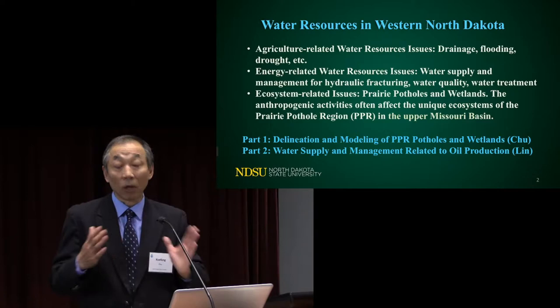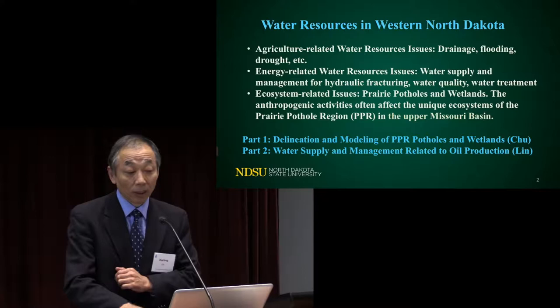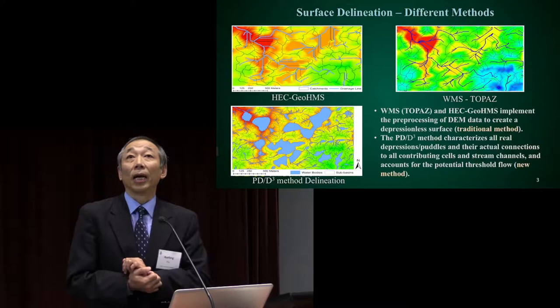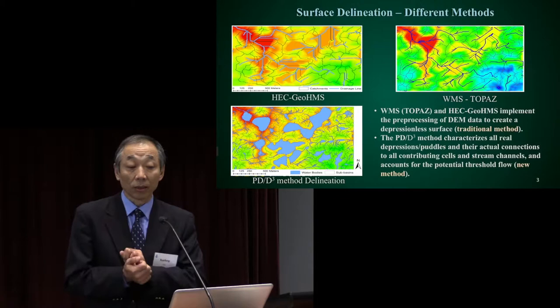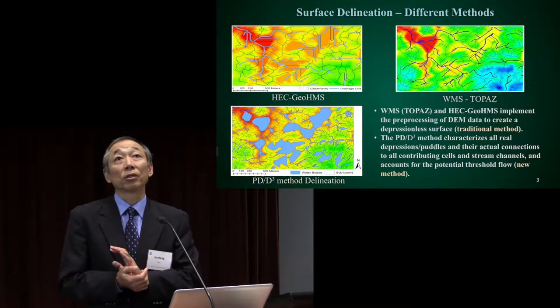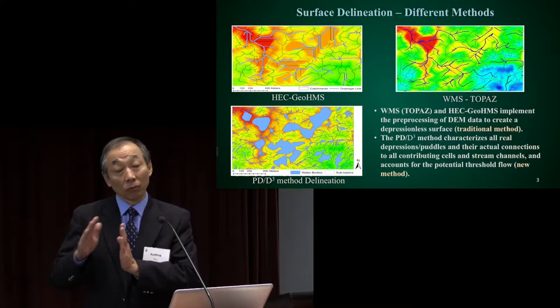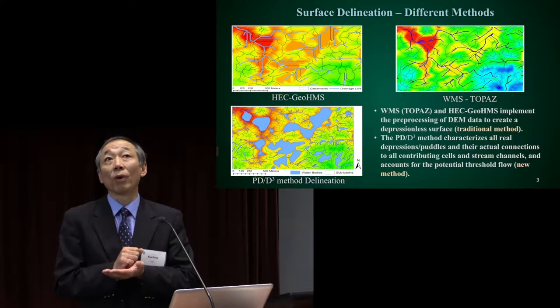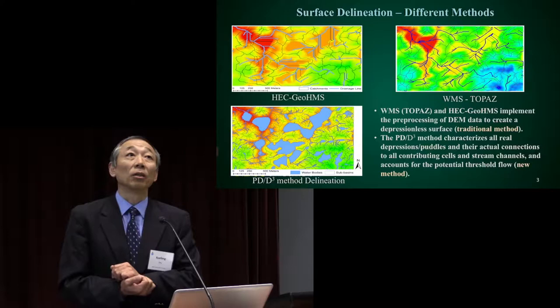First, why do we have an interest in delineation and modeling, especially for potholes and wetlands? I want to start from the general modeling practice. We talk a lot about watersheds — this part is about the Missouri River watershed basin, a huge basin with many small tributaries and small basins. We need to do watershed modeling. The general practice always requires a DEM; based on DEM we can do delineation, determine flow directions and accumulations.